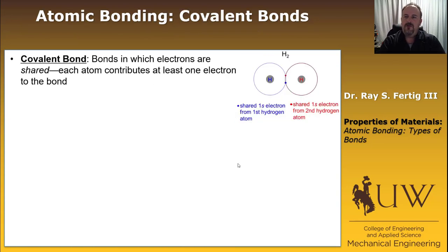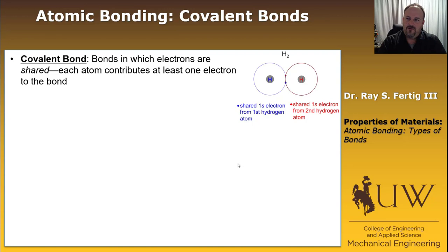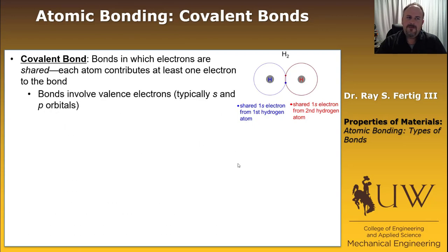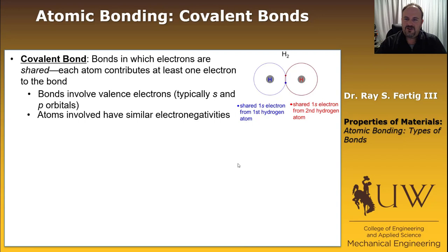Covalent bonds occur when electrons are shared — they don't just give up or receive an electron, they share one. Each atom contributes at least one electron to the bond. I'm showing this for diatomic hydrogen, where each atom donates an electron, they share the electron, and that completes the outer shell of each atom. These bonds typically involve valence electrons, just like ionic bonding — that's going to be our S and P orbitals — which means electronegativities are relevant. Atoms involved in covalent bonding have similar electronegativities, whereas ionic bonds required large differences in electronegativity.